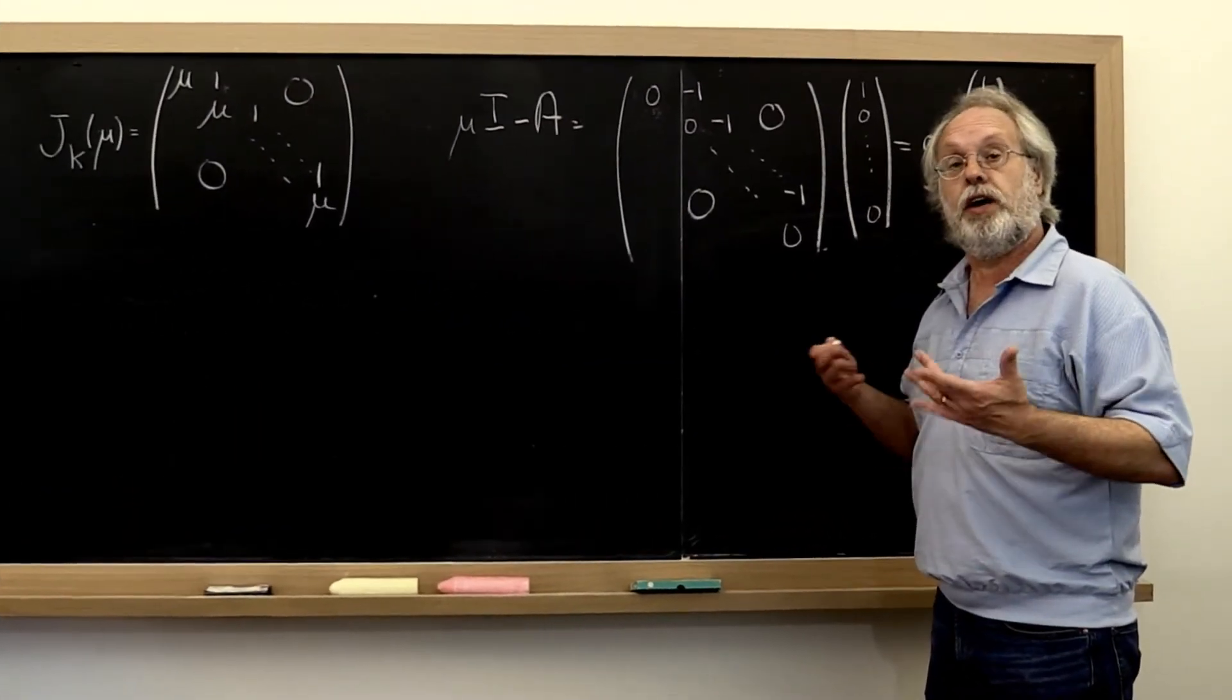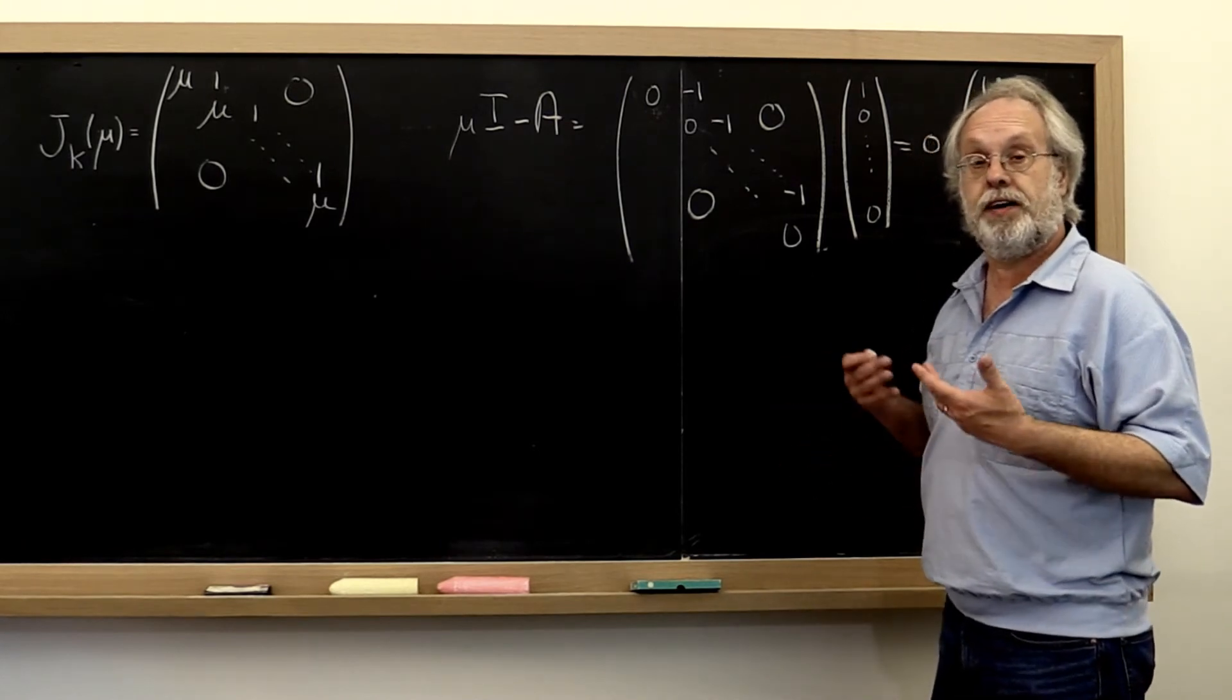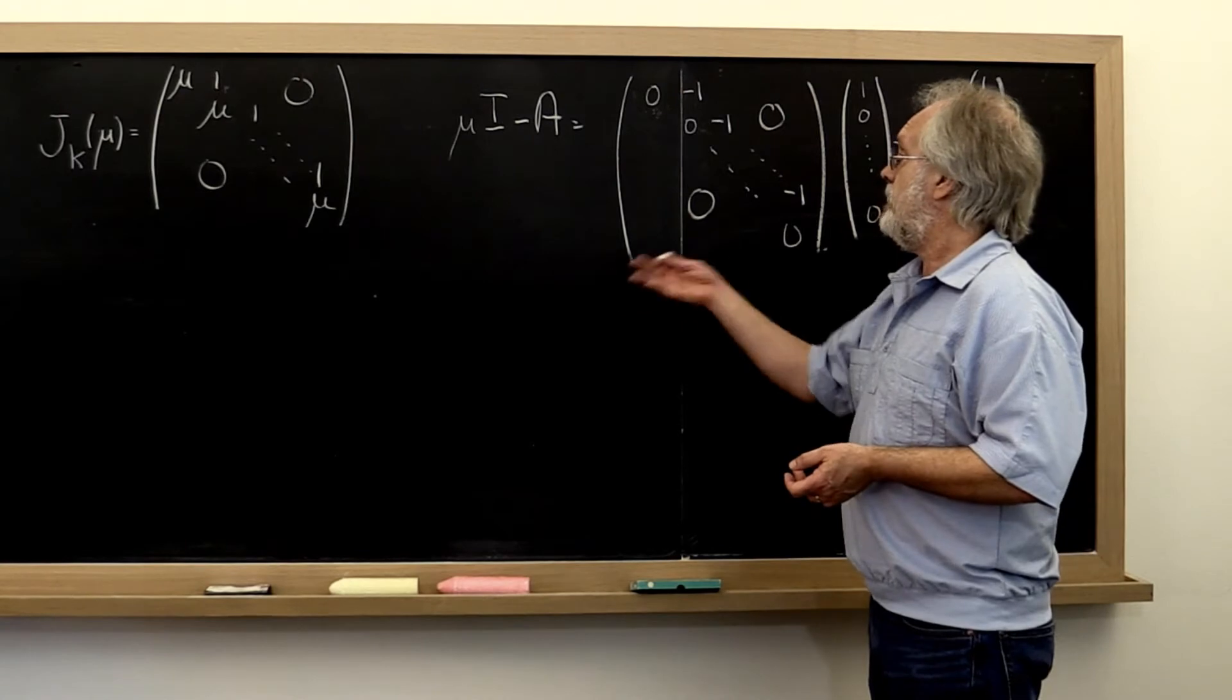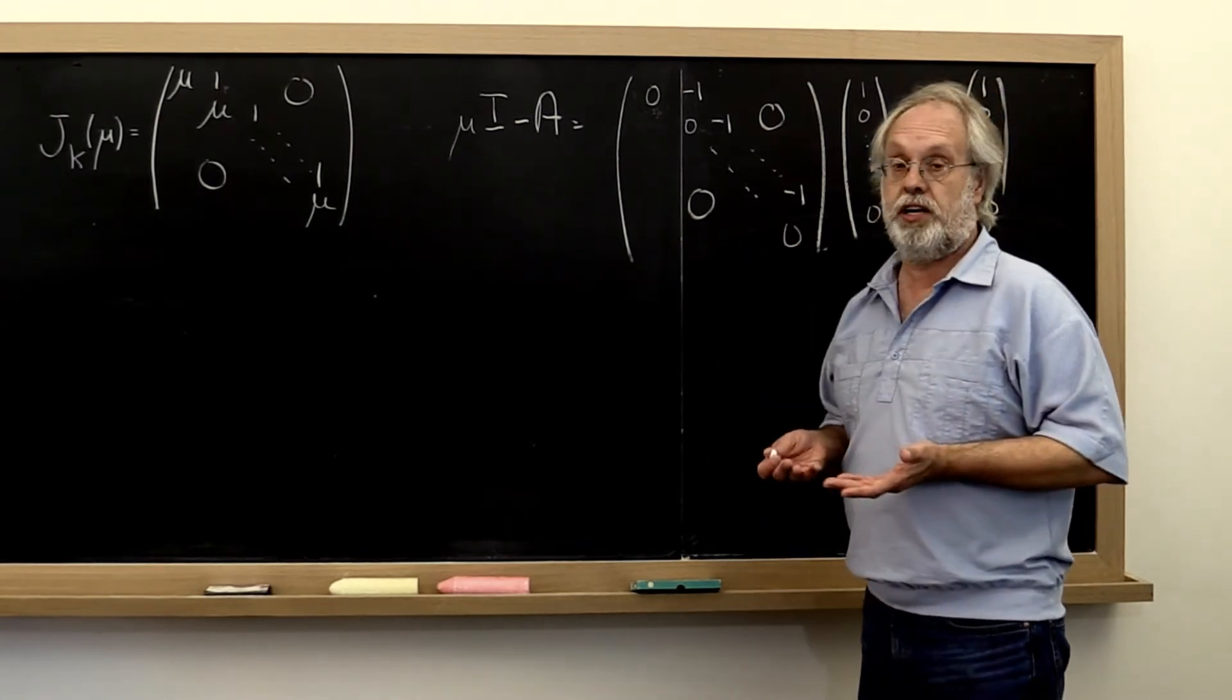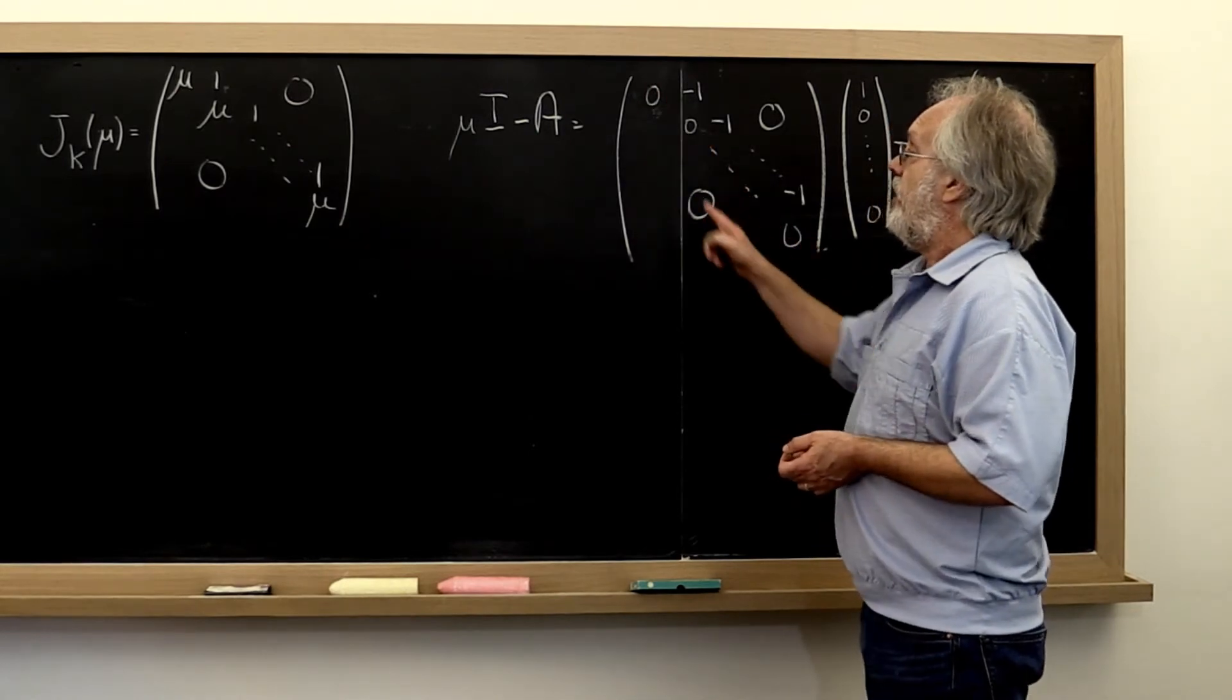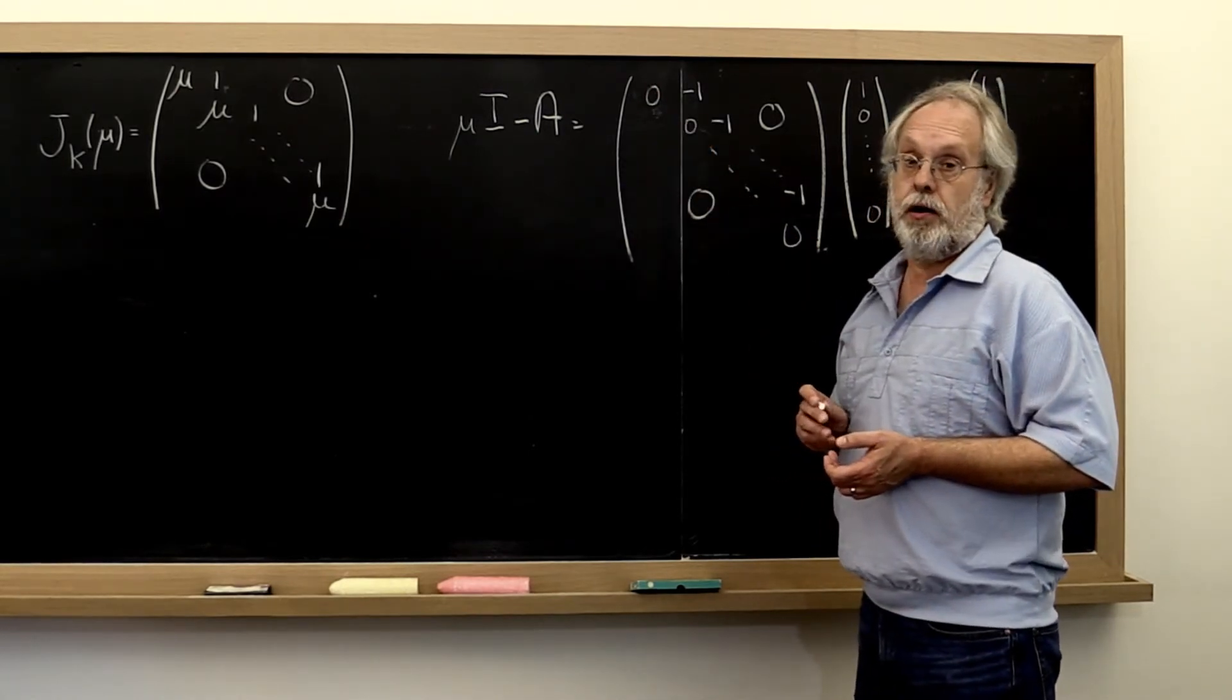Now in an undergraduate course you were taught that to find vectors in the null space of a matrix, you take the matrix, reduce it to upper echelon form, and then look for zero pivots. And that tells you where the free variables are.